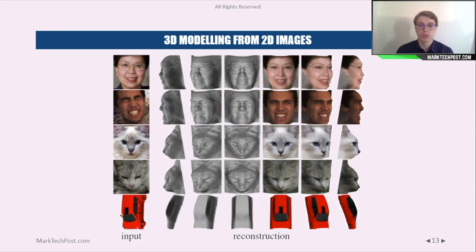You can see in this picture that the model is able to reconstruct a 3D model from 2D images of human faces, cats, and even cars.